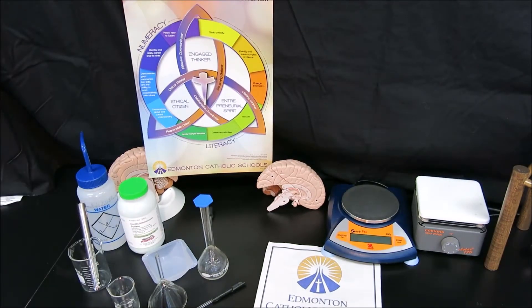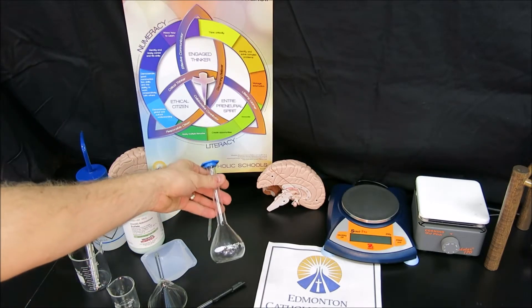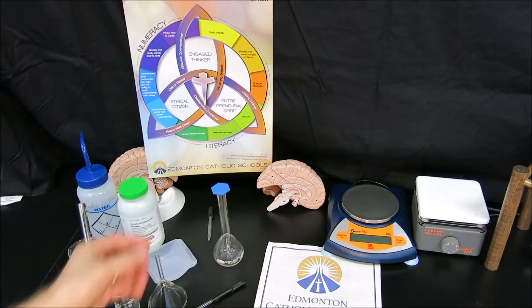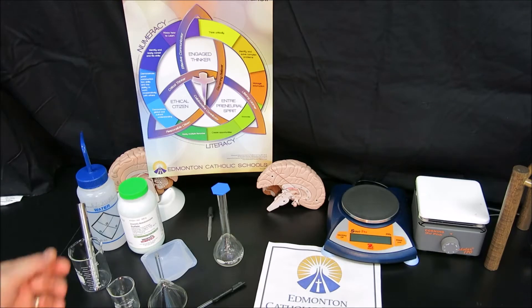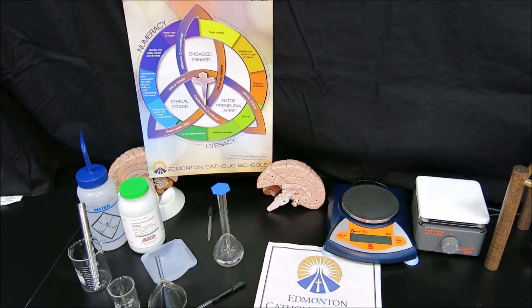In order to make a standard solution, we have to measure the solid from scratch. In this experiment, we're using a 100 milliliter volumetric flask, and our primary standard has been calculated using mole calculations based on the concentration we want in this flask. Our calculated mass today will be 1.00 grams, and we'll weigh that out on the scale.